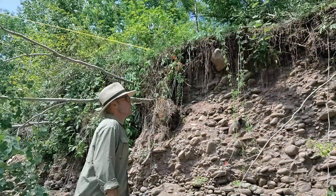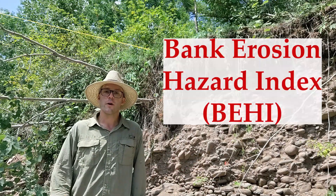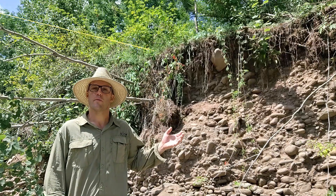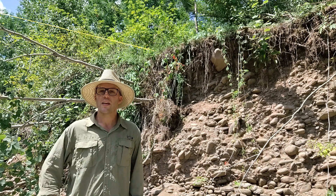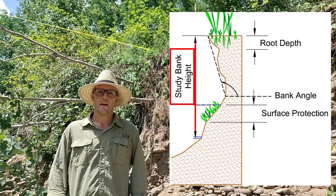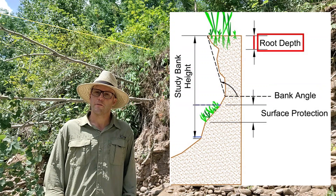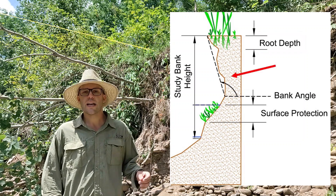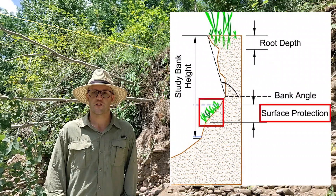So let's see how this all works. First we look at the bank itself and we assign a bank erosion hazard index, or a BEHI rating — basically, how susceptible is this stream bank to erosion? To assign a BEHI, we look at categories including the height of the bank, the bank angle, the depth and density of any plant roots growing in the stream bank, the geologic material, and whether or not any surface protection is being provided to the base of the bank from large rocks or vegetation.